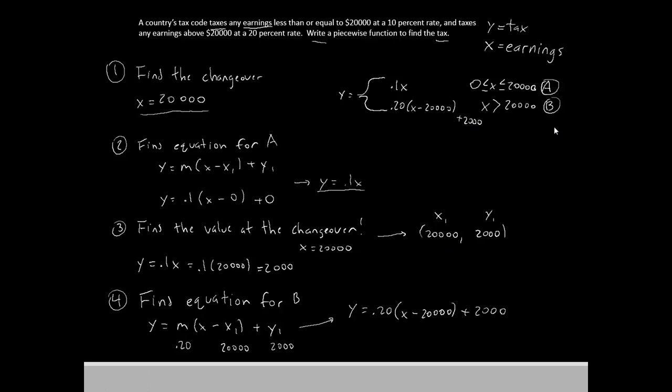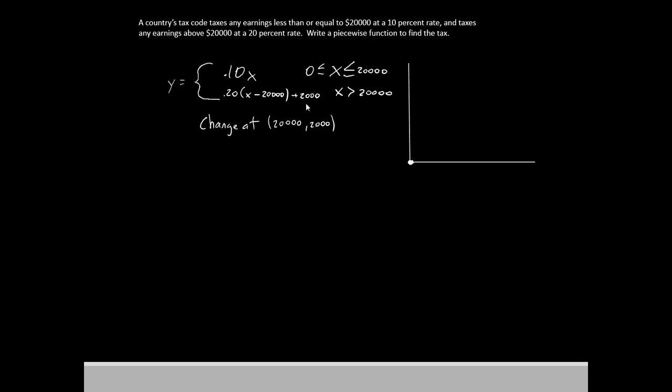Alright, and so that is our piecewise function. Our piecewise function is now complete. Let's go ahead and try to graph it. So here's our piecewise function again, and we know that the changeover is at 20,000.